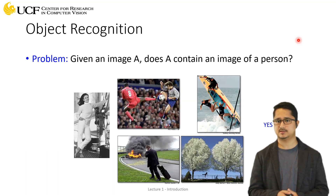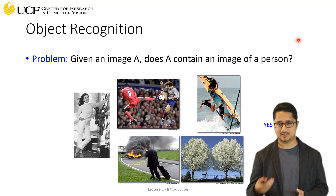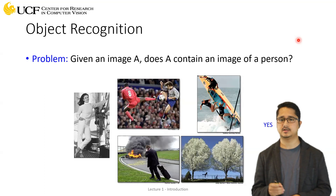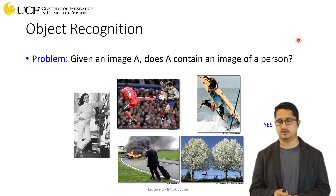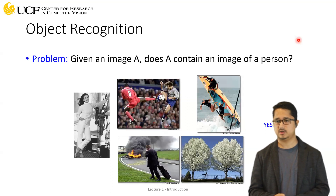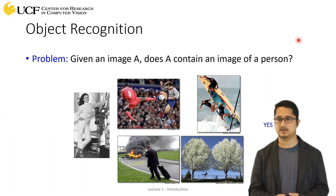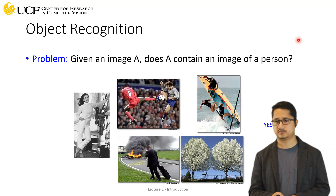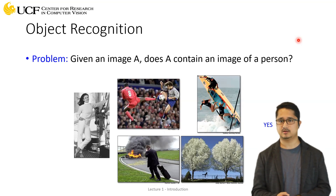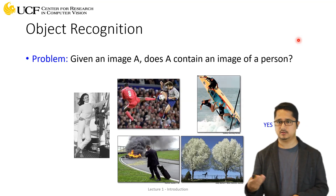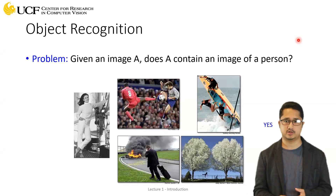For example, we have a set of images here, and if the class we are interested in is 'person', the question we'll ask is whether a person is present in this image or not — that's a person recognition problem. You can have multiple classes, for example a tree or water, and the question remains the same. In scenarios with multiple objects, as long as the object is present, we just say it's present and there's a positive response from the AI model.